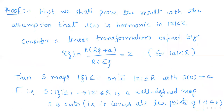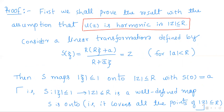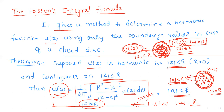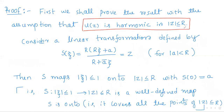Now we shall prove it. First we shall prove the result with the stronger assumption that u of z is harmonic in the closed disk mod z less than or equal to r. In the hypothesis, u of z is harmonic in the open disk, but first we make a stronger assumption. Now consider a linear transformation defined by S(z) = r · (rz + a) / (r + ā·z), defined for any point a with modulus of a less than r.